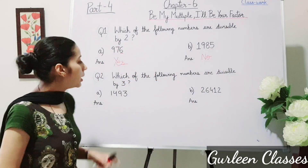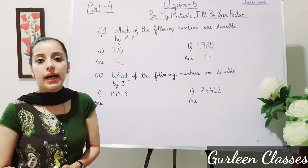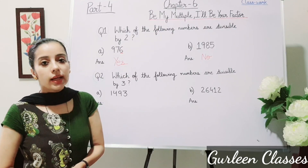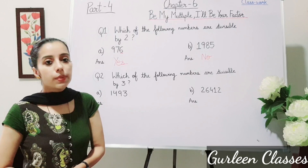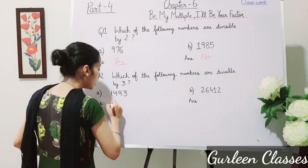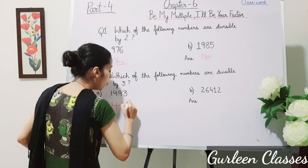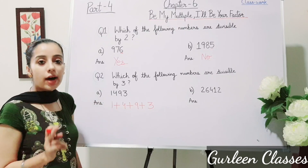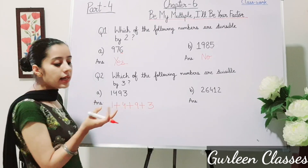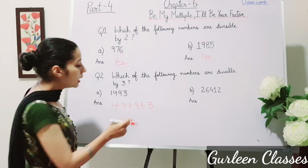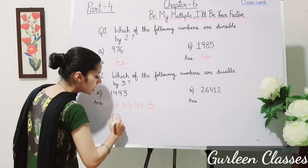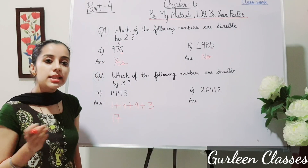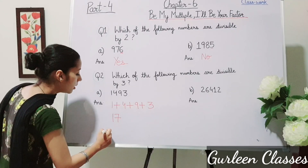Question number 2: Which of the following numbers are divisible by 3? Part A: 1493. The sum of its digits: 1 plus 4 plus 9 plus 3 equals 17. Is 17 divisible by 3? No — 17 does not appear in the 3 times table. So no, 1493 is not divisible by 3.